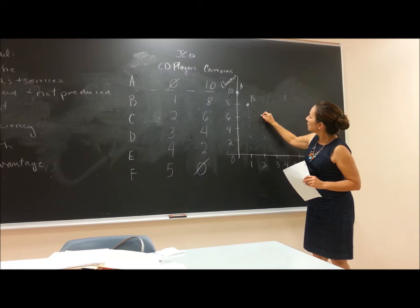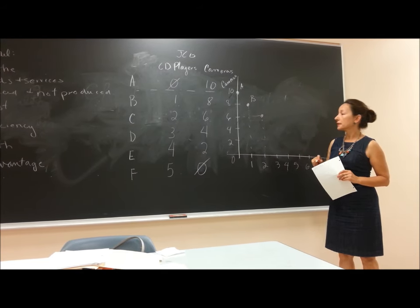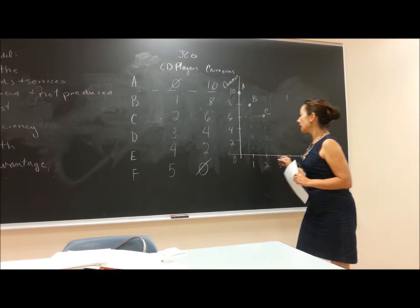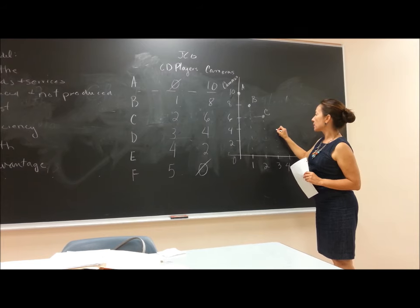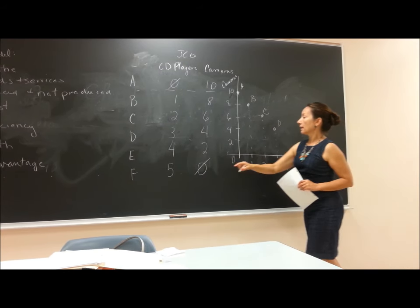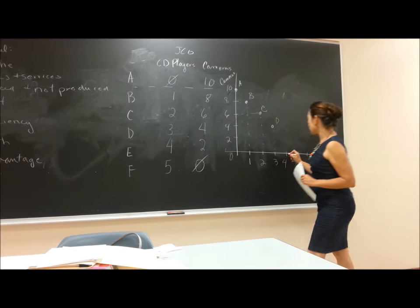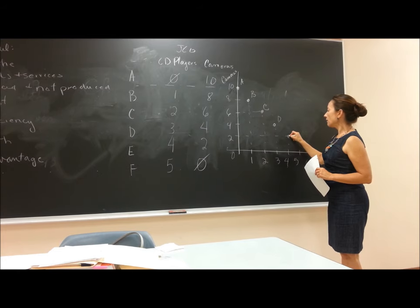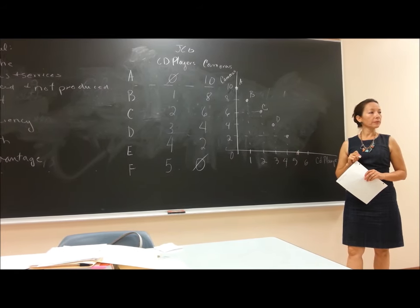Point C is two CD players and six cameras. The fourth combination is point D: three CD players and four cameras. The fifth is four CD players and two cameras. And finally, five CD players and zero cameras.